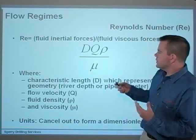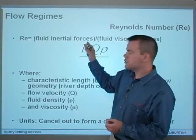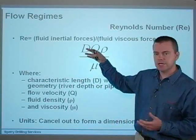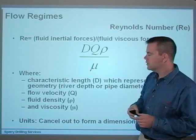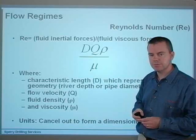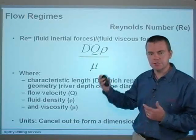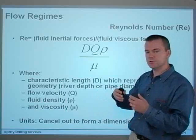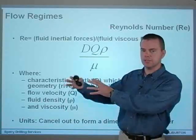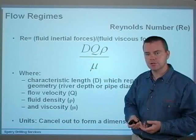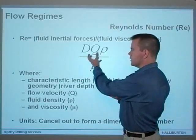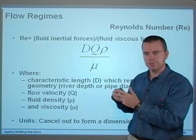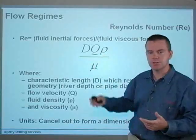To summarize that in an equation: that's fluid inertial forces divided by fluid viscous forces. Inertial forces are basically your geometry — the depth of the channel or pipe diameter — Q being your flow rate or fluid velocity, and rho being the density. These are the things trying to keep the fluid moving in a straight line. On the bottom we've got viscosity, mu, which counteracts the inertial forces by using friction to dampen their effects. That's what this equation is basically saying.